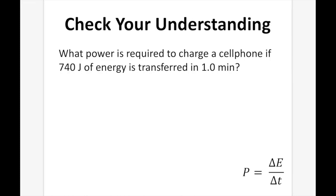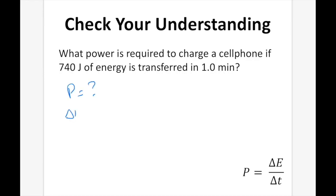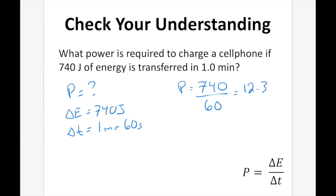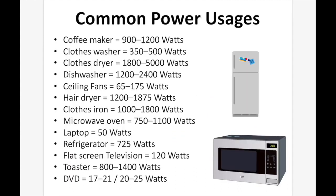Check your understanding. What power is required to charge a cell phone if 740 joules of energy is transferred in one minute? P = ΔE / Δt. ΔE is 740 joules and Δt is one minute, which equals 60 seconds. So P = 740 / 60 = 12.33 watts. We need two significant digits, so our final answer is 12 watts. Here are some common power usages: a coffee maker uses 900–1,200 watts, a DVD player around 20 watts, a toaster 800–1,400 watts, a laptop only 50 watts, and a clothes iron upwards of 1,800 watts. What kind of pattern do you see?